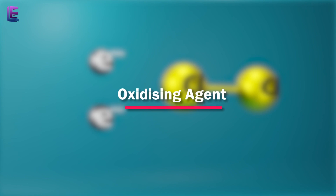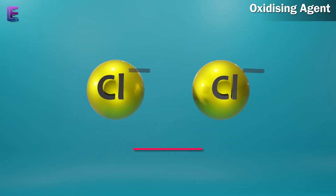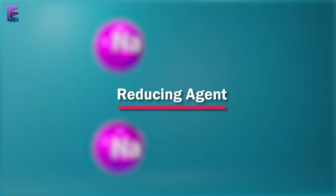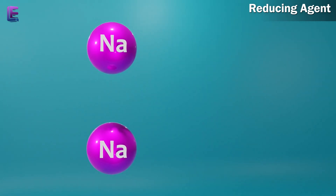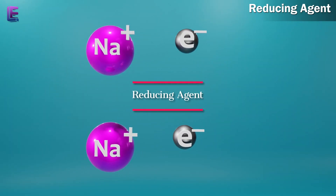Oxidizing agent: The acceptor of electrons is called the oxidizing agent. Reducing agent: The donor of electrons is called the reducing agent.